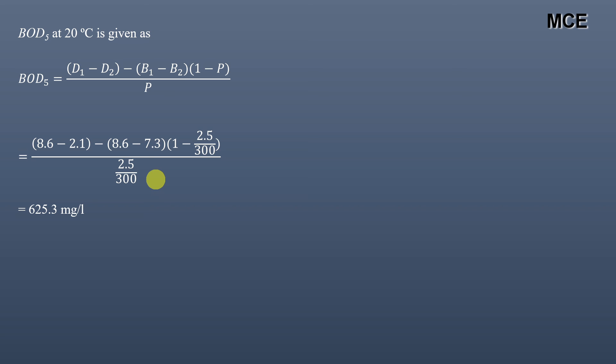So 625.3 mg/L is the BOD of this waste water, found using the seeded dilution water. I hope this solution video was clear and you learned how to find the BOD using seeded dilution water. If you found this helpful, please subscribe to the channel and share this video with your friends. Thanks for watching and stay tuned.